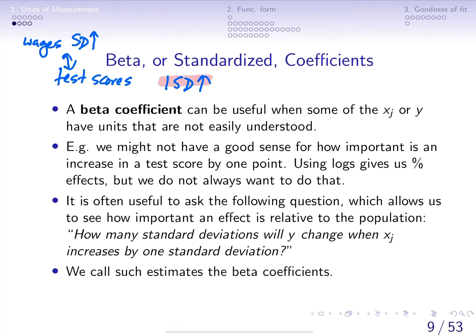This is the connection we're trying to make here, and everything would be measured in standard deviations. Again, a beta coefficient is going to be used when some of the independent variables or the dependent variable have units that are not easily understood.